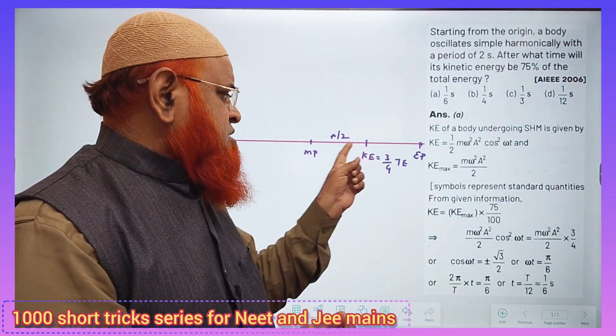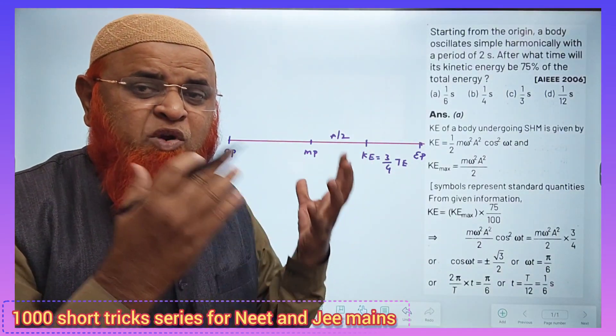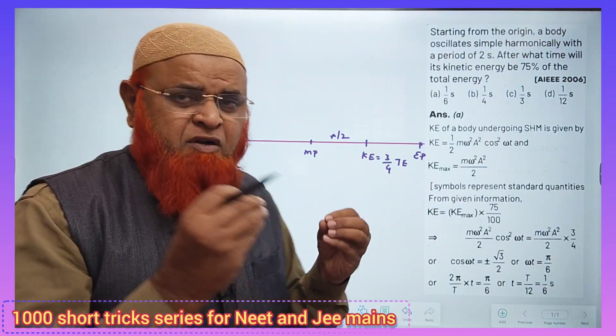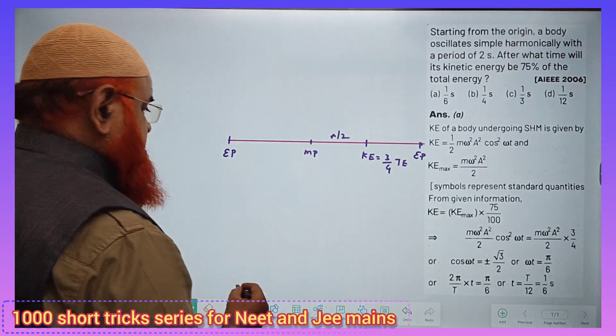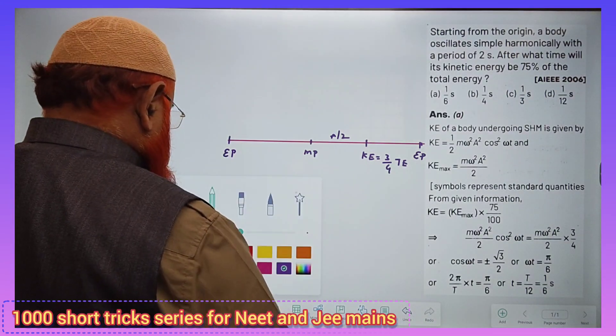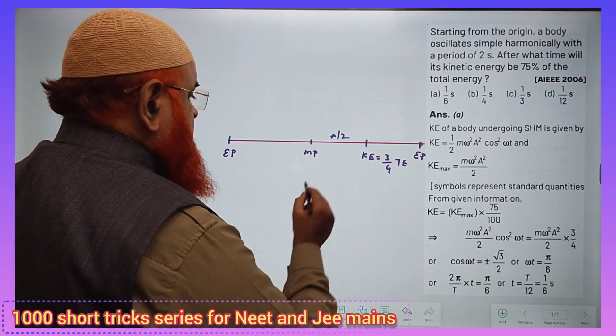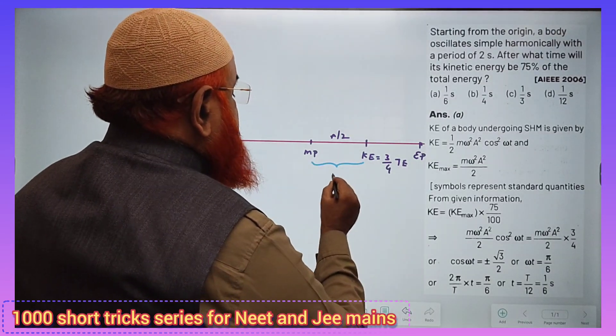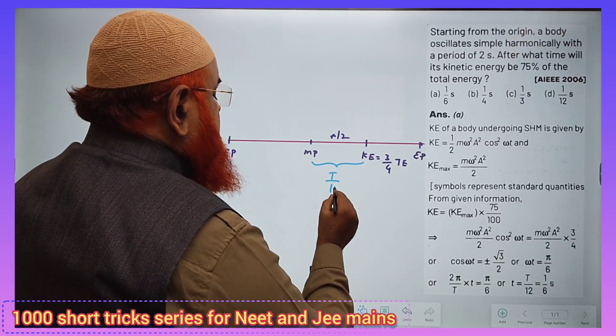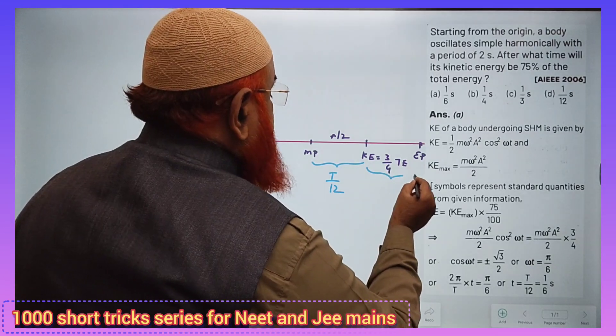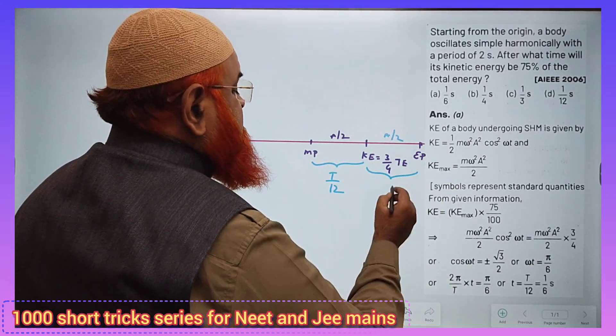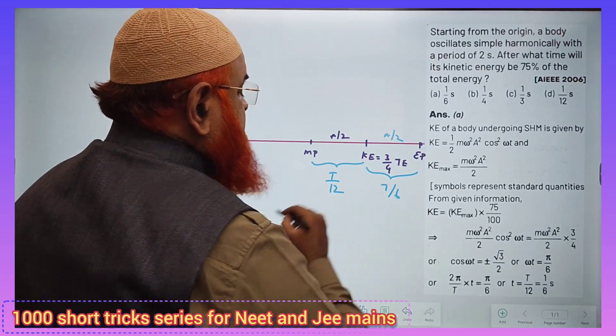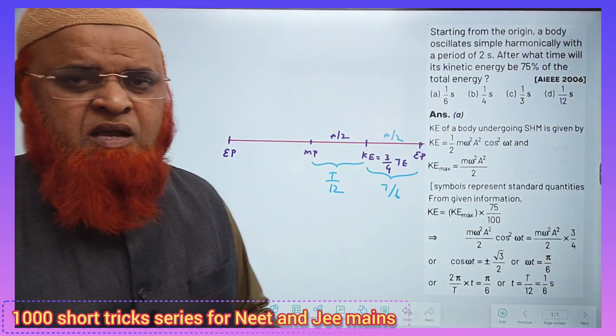What is the time taken to travel from mean position to the point where amplitude is half? After doing hundreds of problems, there is a conclusion: from mean position to a/2, time taken is T/12, and for the remaining half of the amplitude, time taken is T/6. It is well known after doing hundreds of problems.